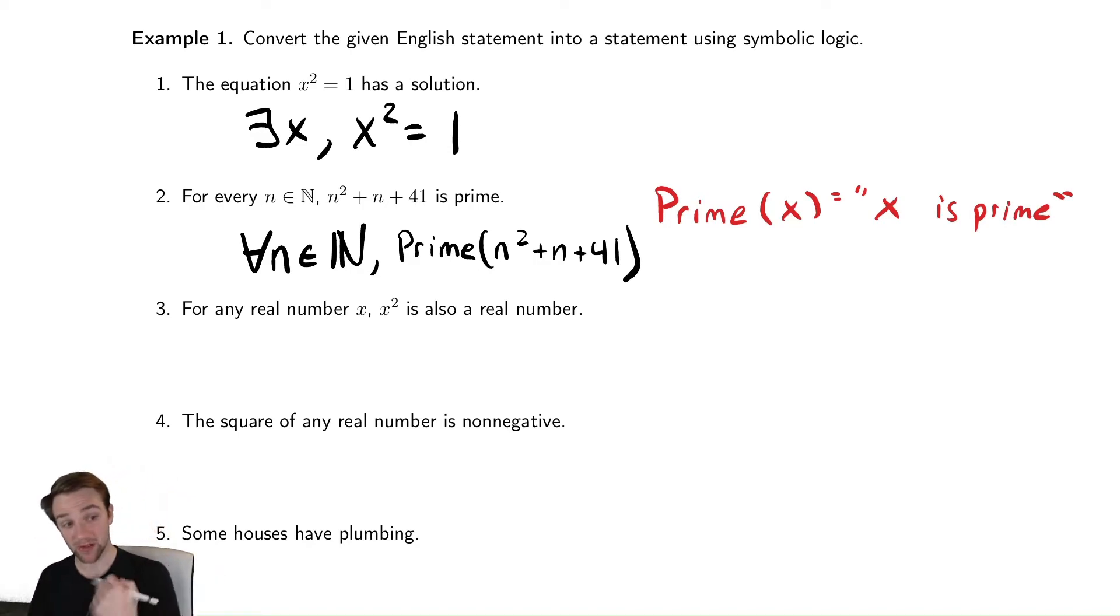The next one says for any real number, x squared is also a real number. So let's write that down. That's for every x that is a real number, x squared is a real number, which looks a bit funny. It says for everything in a set, this other thing is also in a set. Completely valid sentence. Also, it's true. The previous one turns out to not be true. You can try to prove that on your own if you want.